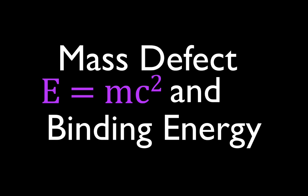In today's video I'm going to be going over mass defect and binding energy. I'll give a quick explanation of what mass defect and binding energy are, then go over an example calculating them. Einstein's equation E=mc² is relevant here because m is mass in kilograms and the binding energy is in joules, but usually binding energy is expressed in electron volts or mega electron volts, so we'll be converting back and forth between energy and mass.